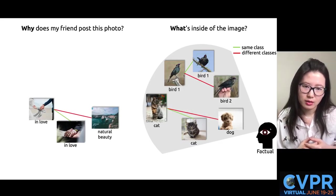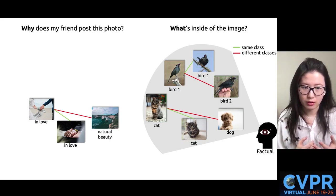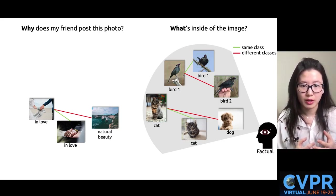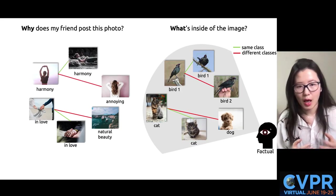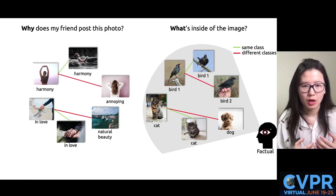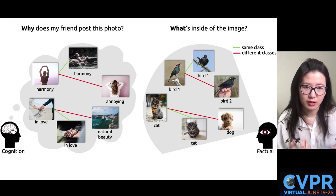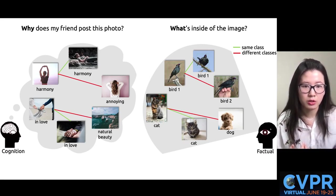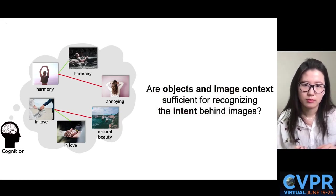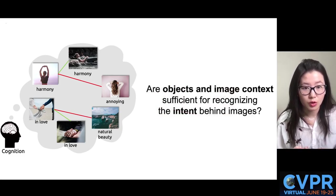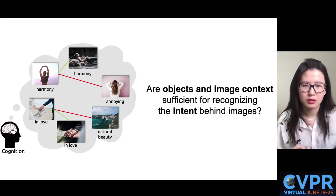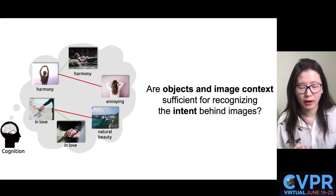In certain cases, intent can be inferred rather directly from the representative objects and scenes. However, two images with completely different content can represent the same intent. We hypothesize that intent understanding may require reasoning beyond perception-level recognition or factual observation. This brings us to the core question we want to explore: are objects and their image context sufficient for recognizing the intent behind images?